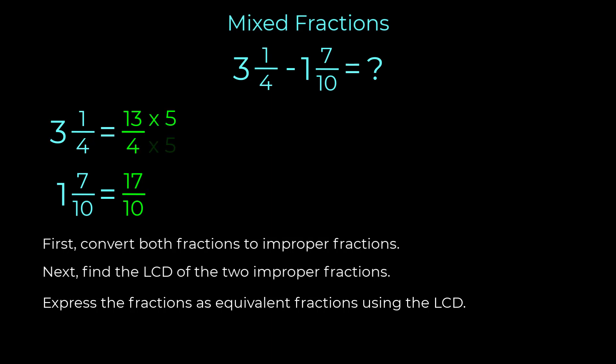13 times five is sixty-five. Four times five is twenty. The equivalent fraction is sixty-five over twenty.